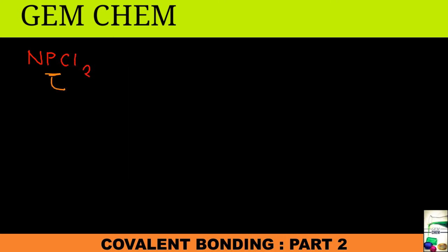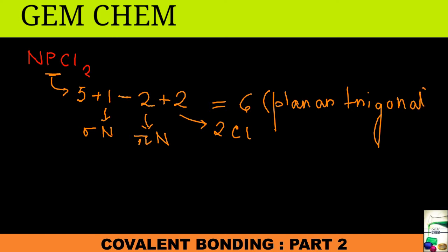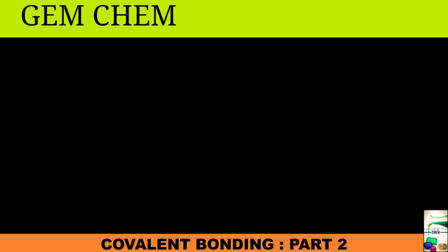Next is NPCl₂, with phosphorus as the central atom. The count is 5 + 1 (sigma from nitrogen) − 2 (pi bonds from nitrogen) + 2 (for two chlorines) = planar trigonal. The structure looks like P triple bond N, with two chlorine atoms attached to phosphorus.